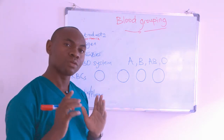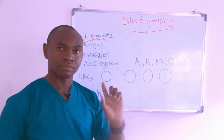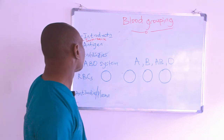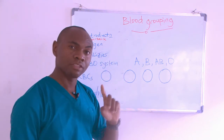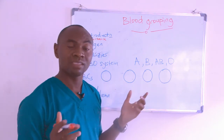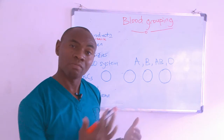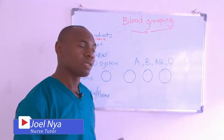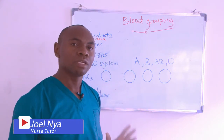In the red blood cells of every individual there are markers — there are substances, there are identities — and those markers are called antigens. These antigens are the key in identifying your blood group. On a normal day an antigen is a foreign substance — a virus can be an antigen, a bacteria can be an antigen because it's a foreign body. However, there are also naturally occurring antigens in your red blood cells, and the body does not harm them.